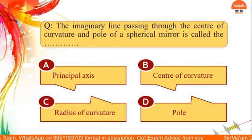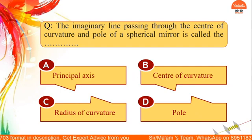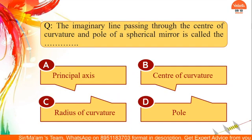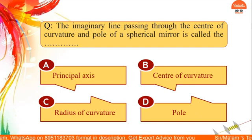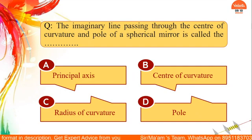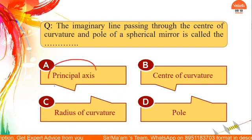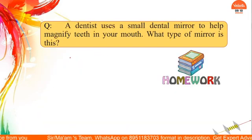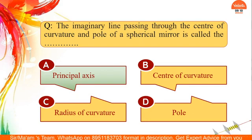Next question: the imaginary line passing through the center of curvature and the pole of a spherical mirror is called what? Options include principal axis, center of curvature, radius of curvature, or the pole. The answer is the principal axis — the line passing through the center of curvature and the pole is called the principal axis.